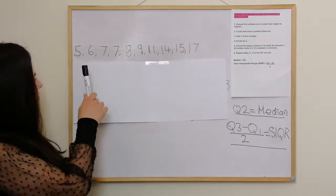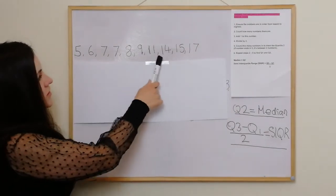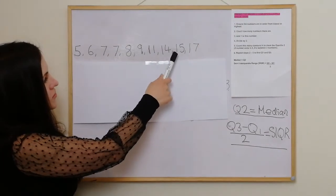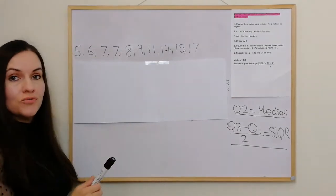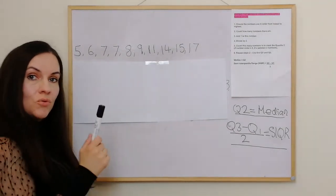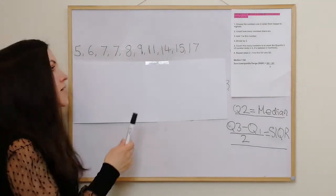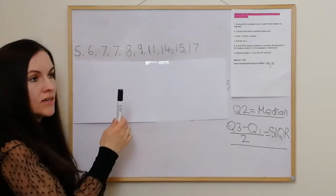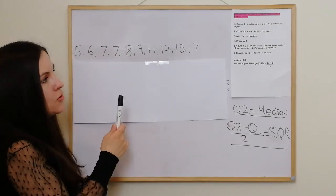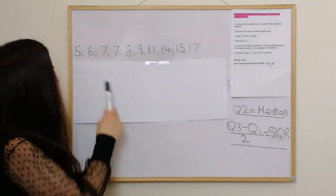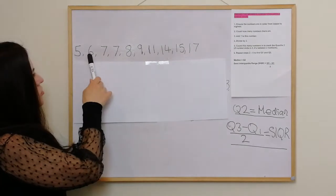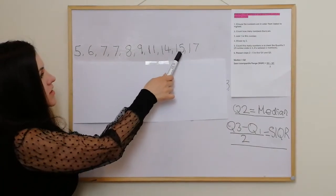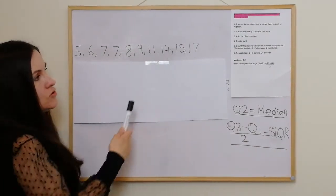In this example, we're going to use these numbers to work out the median and the semi-interquartile range. As per our six-step guide, we have them in order from lowest to highest. We count how many numbers there are — so there's 1, 2, 3, 4, 5, 6, 7, 8, 9, 10. So we have 10.